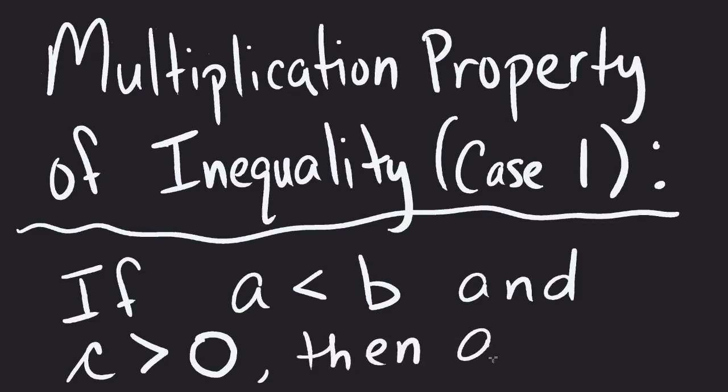Well then a times c is going to be less than b times c. Now this inequality for the a < b right here can also be a > b, a ≤ b, or a ≥ b. What it basically says is that when c is greater than zero, that multiplication process will not change the direction of the inequality sign.